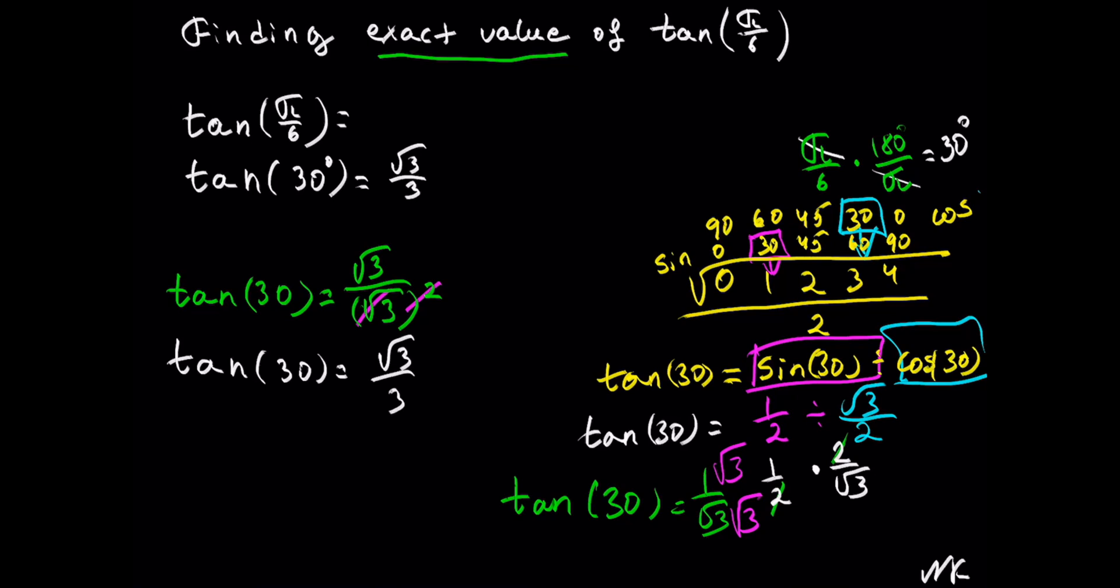If tan(30°) = √3/3, so does tan(π/6). Therefore, tan(π/6) = √3/3, and this is our solution. That's all.